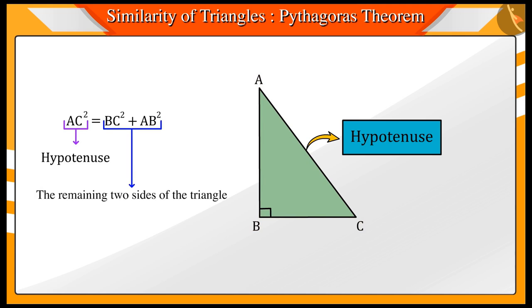Thus, we can say that in a right-angled triangle, the square of the hypotenuse is equal to the sum of the squares of the remaining two sides, which proves the Pythagoras theorem.